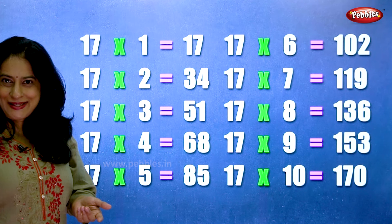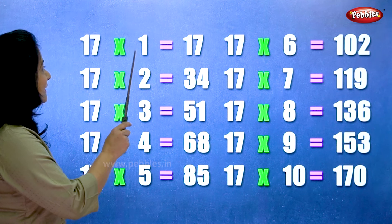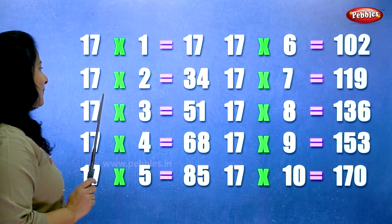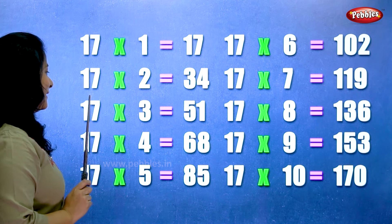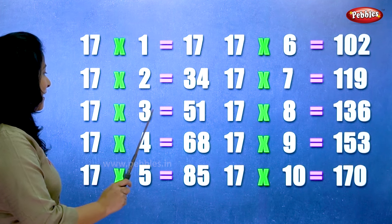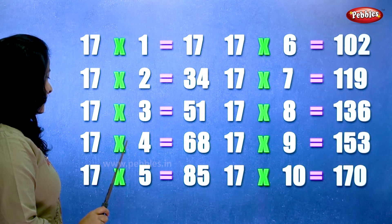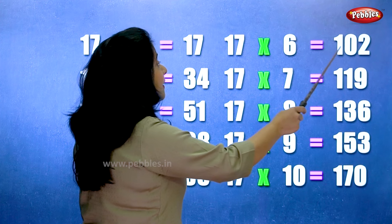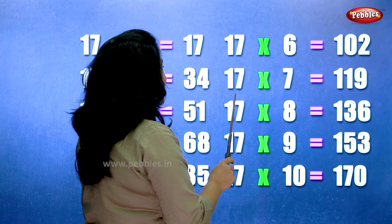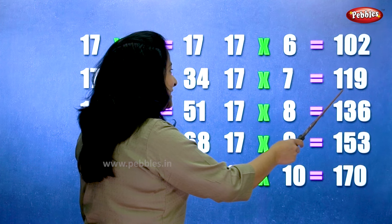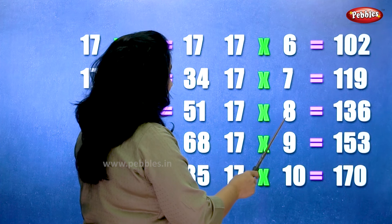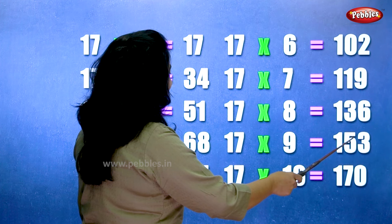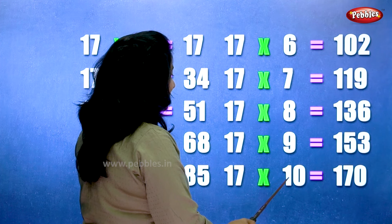Let's learn the table of seventeen one more time. Seventeen ones are seventeen. Seventeen twos are thirty-four. Seventeen threes are fifty-one. Seventeen fours are sixty-eight. Seventeen fives are eighty-five. Seventeen sixes are hundred and two. Seventeen sevens are hundred and nineteen. Seventeen eights are one thirty-six. Seventeen nines are one fifty-three. Seventeen tens are one seventy.